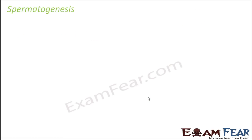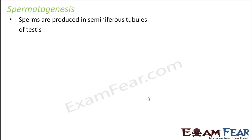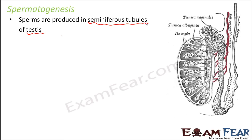Let us look at the process of spermatogenesis — the process by which sperms are produced. As discussed when covering the male reproductive system, sperms are produced inside the testis, specifically in the seminiferous tubules. These are highly coiled tubules, and inside these tubules the sperms are produced.